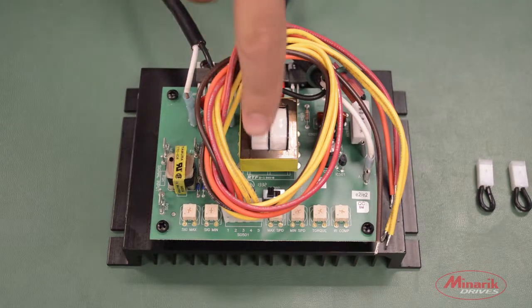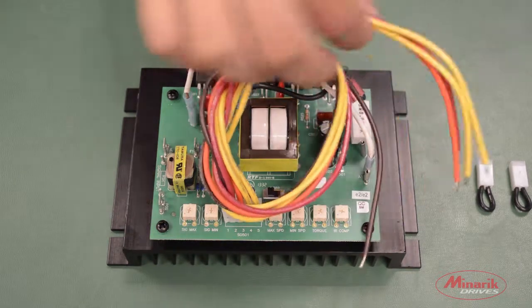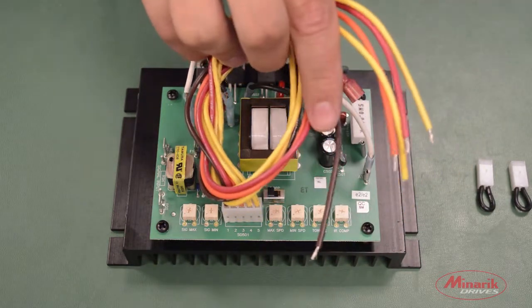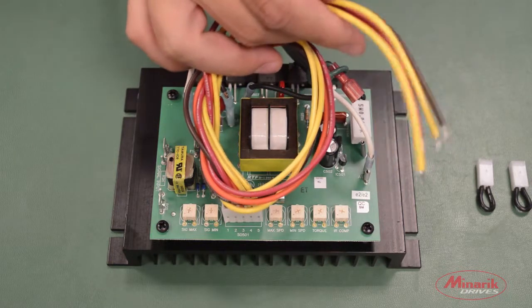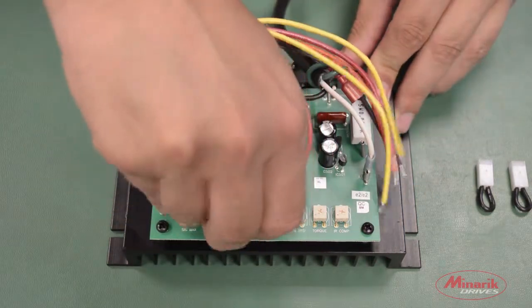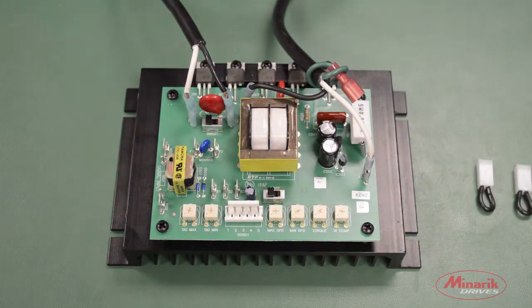The mode select header block is already connected to five open wires that you can use to connect to a PLC or various switches. For this demonstration though, we will be using jumpers to short the terminal pins.